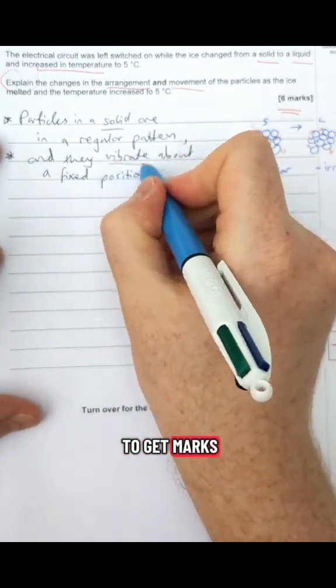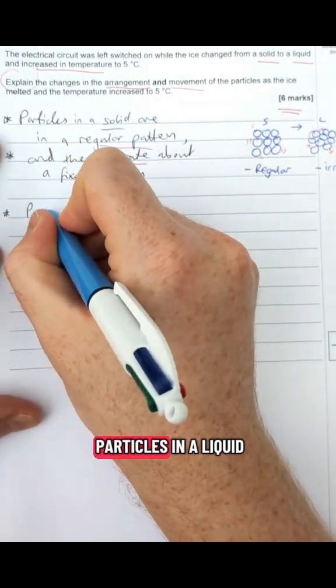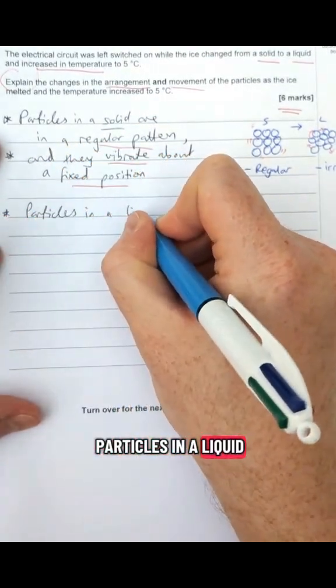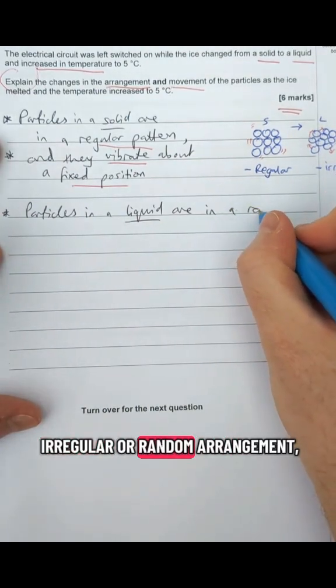you've got to use to get marks in this question. Let's talk about liquids. Next, particles in a liquid are in an irregular or random arrangement